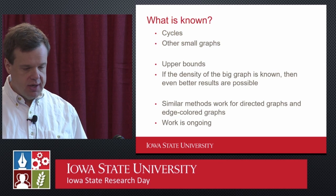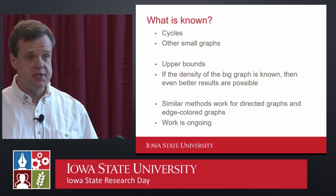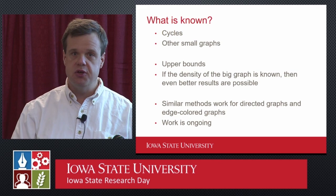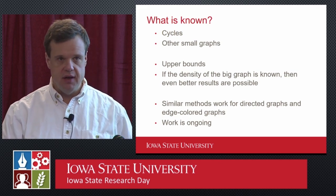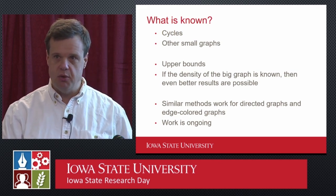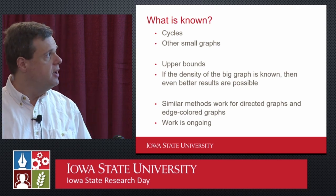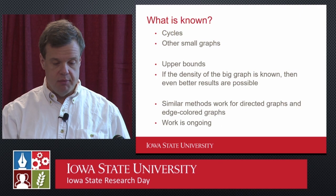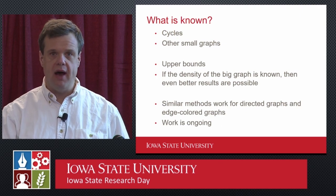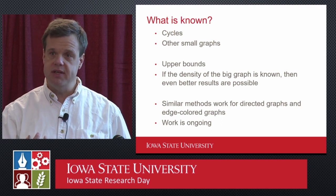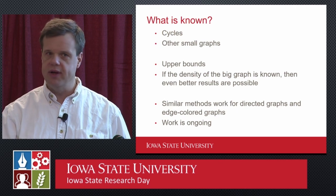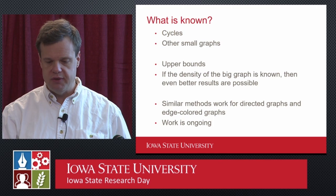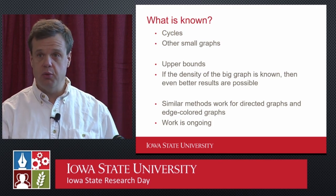There are similar methods for working with directed graphs. If you have an orientation to your links or your edges, then we have similar methods that will give us some answers as to what the most efficient way is to get rid of a forbidden substructure. We also have methods for graphs where links come in different classes — we think of coloring them, so red, blue, yellow — classified according to different criteria.